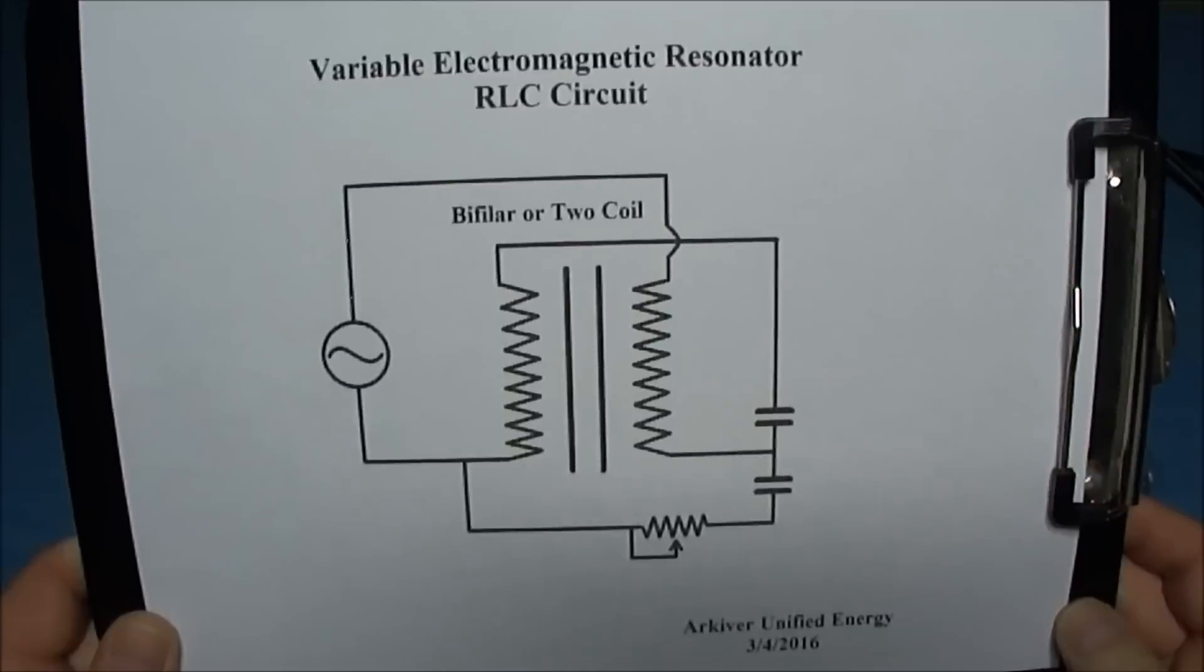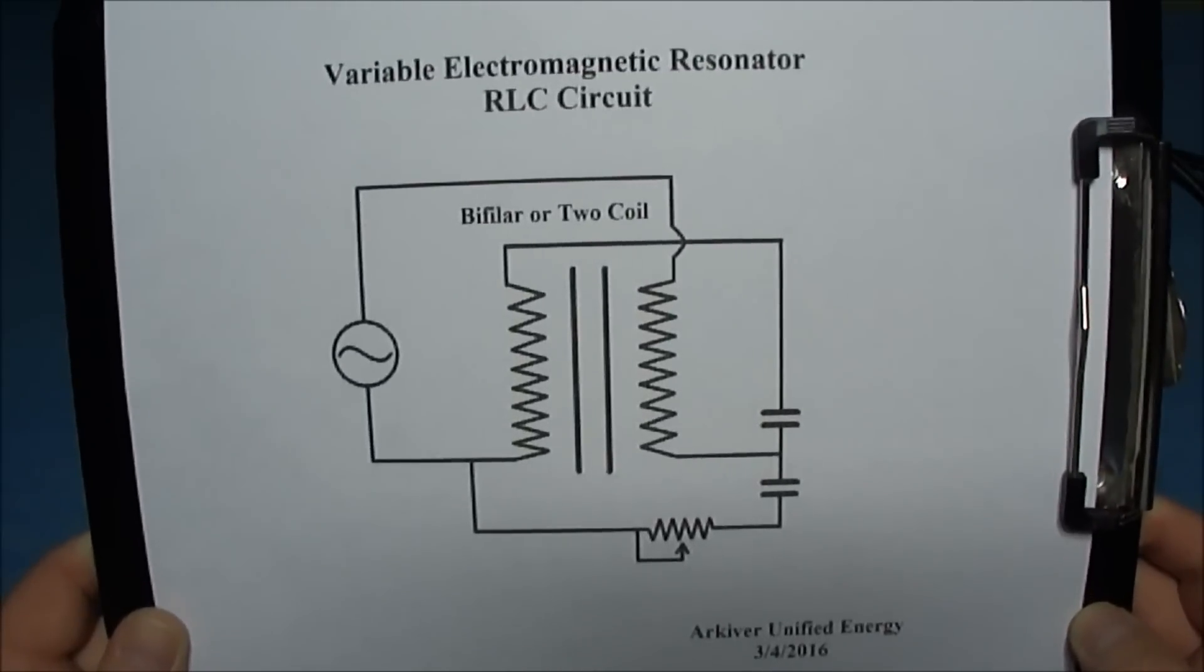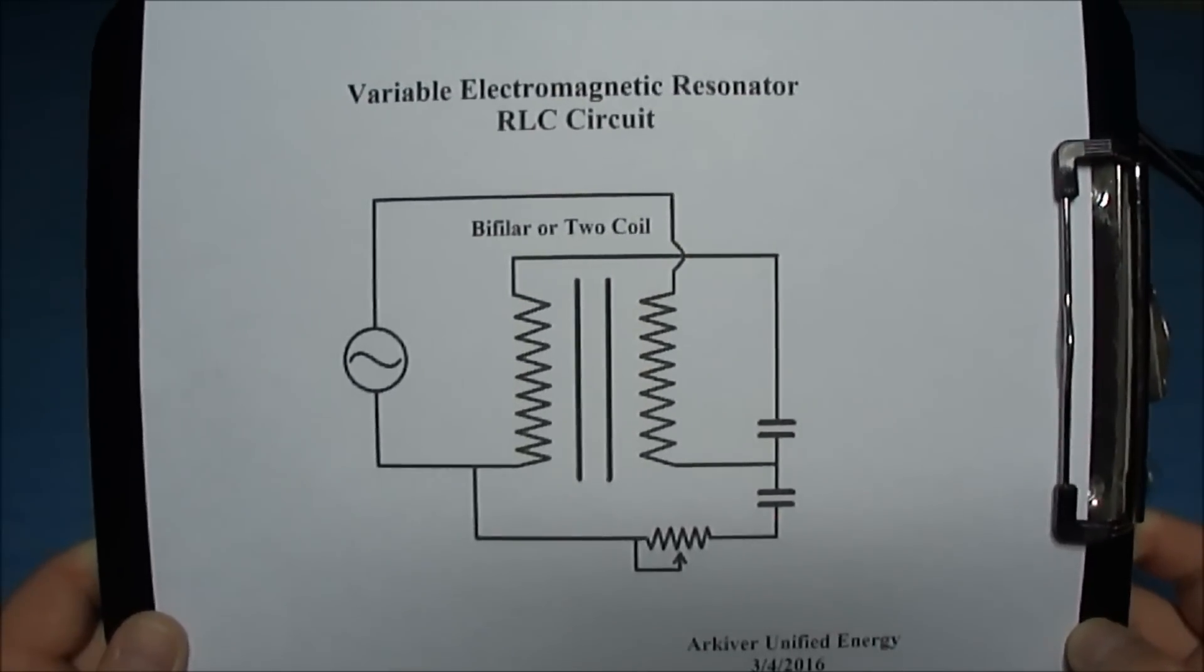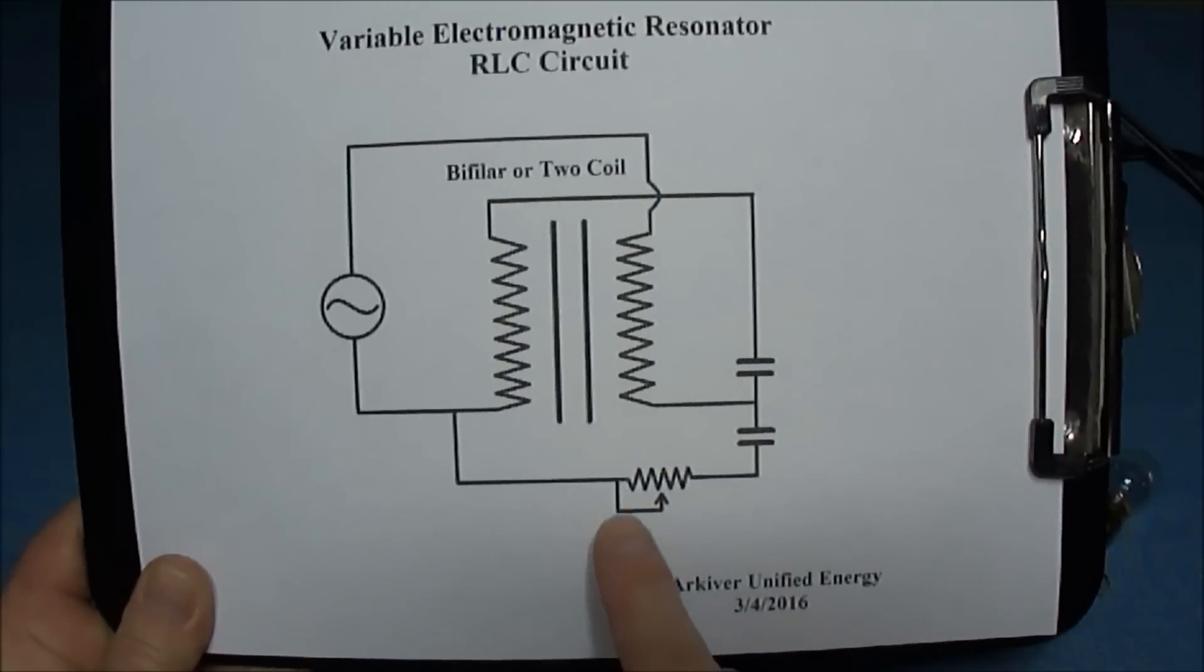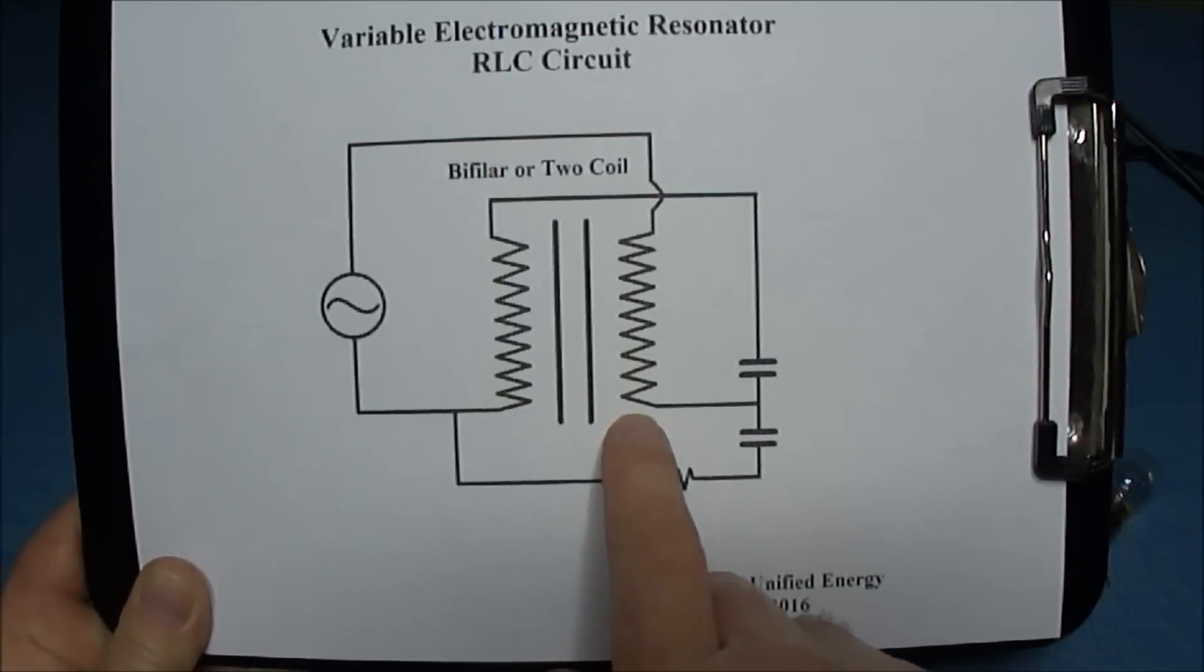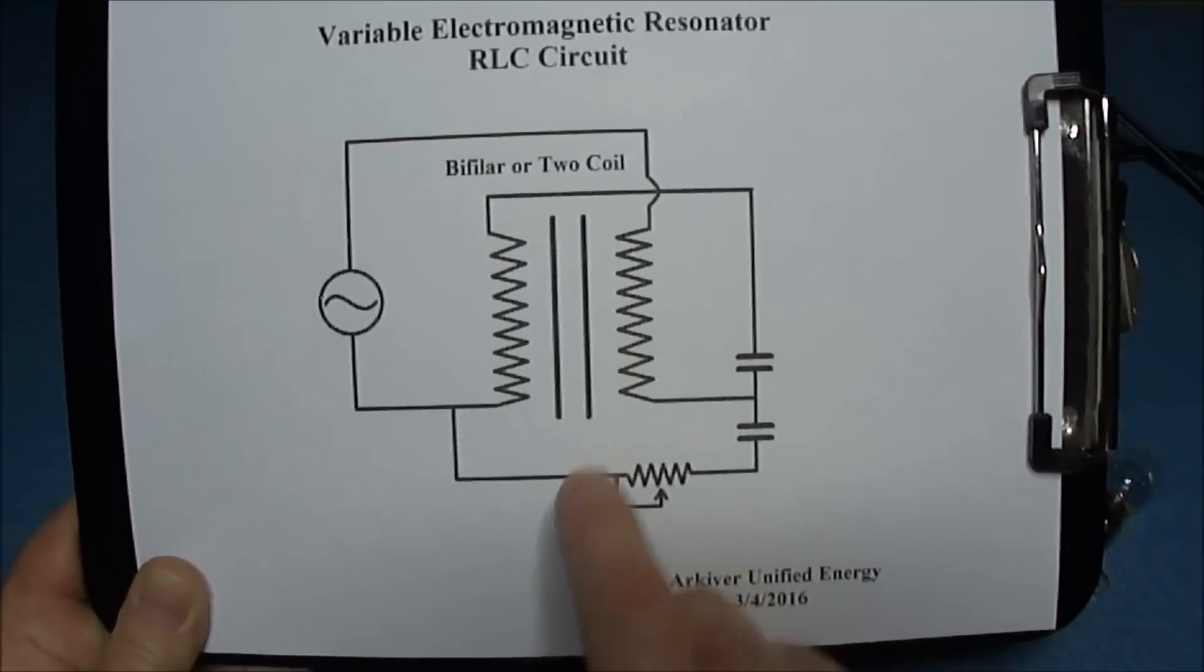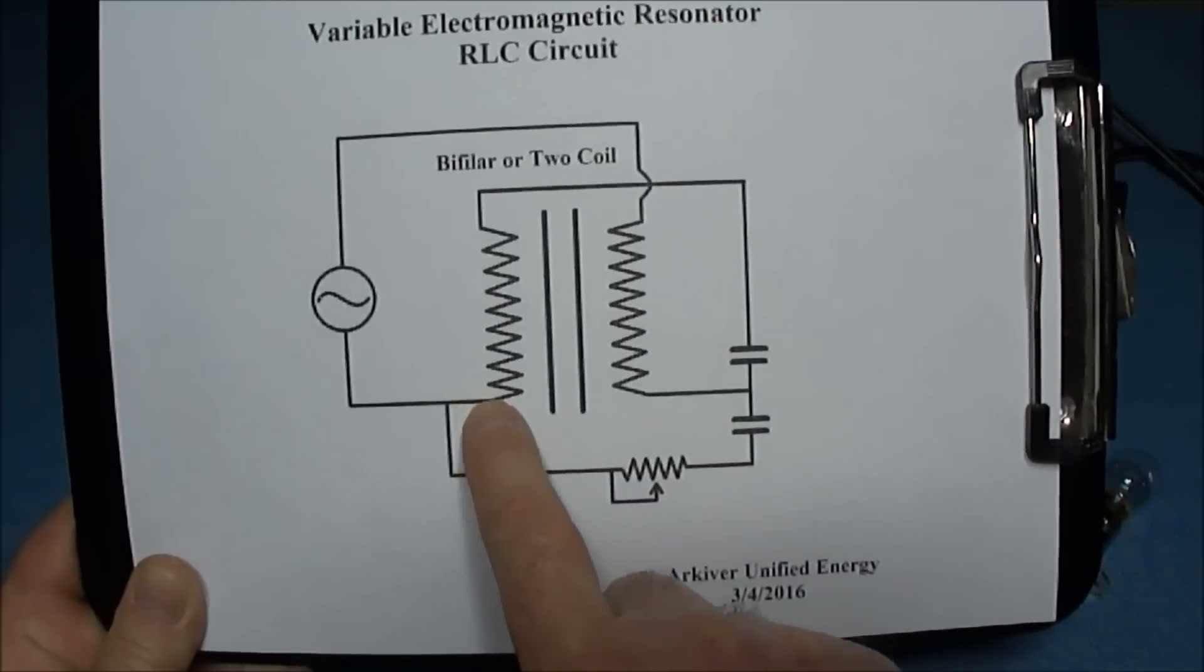This is a variable electromagnetic resonator RLC circuit. This is the bi-filer coil or transformer, these are the outer windings.